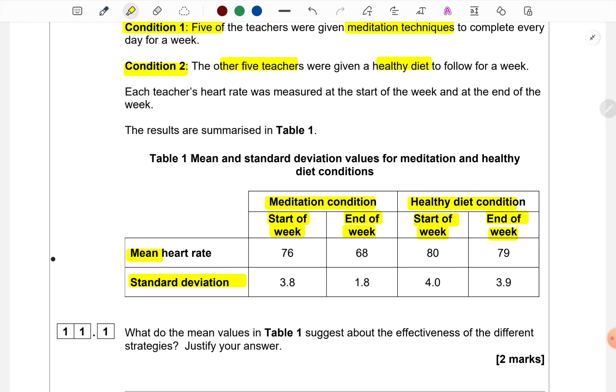Now I won't read out the entire table but we should just glance through what information is given before coming to the question. So for example, at the start of the week, teachers who were in the meditation condition had a mean heart rate of 76 but by the end of the week, their mean heart rate had come down to 68. Like this, we can read any cells of the table.